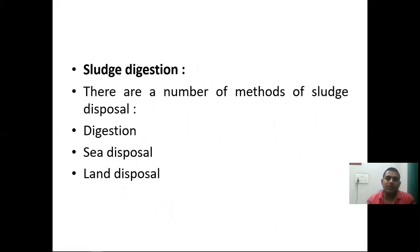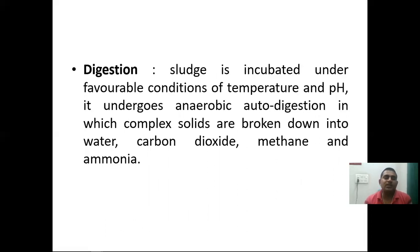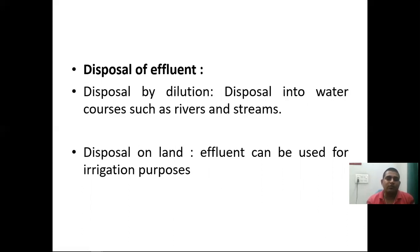Sludge digestion: there are a number of methods of sludge disposal, including digestion, sea disposal, and land disposal. The sludge is incubated under favorable conditions of temperature and pH, and undergoes anaerobic autodigestion in which complex solids are broken down into water, carbon dioxide, methane, and ammonia. Disposal of effluent follows digestion.